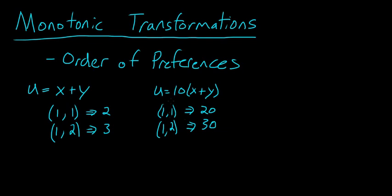So it's obvious that the utility values, 20 and 2 and 30 and 3, are different. But the way to recognize that these two utility functions are equivalent is if the choice that you would make based on the utility function is the same. In this case, I would choose this. And in the case of the utility function with the 10 multiplied in front, I would also choose the bundle that had 1x and 2y.